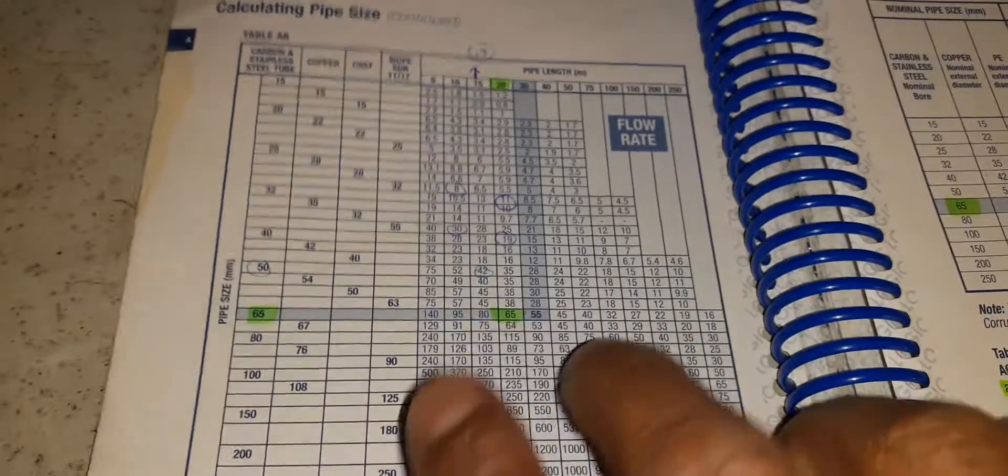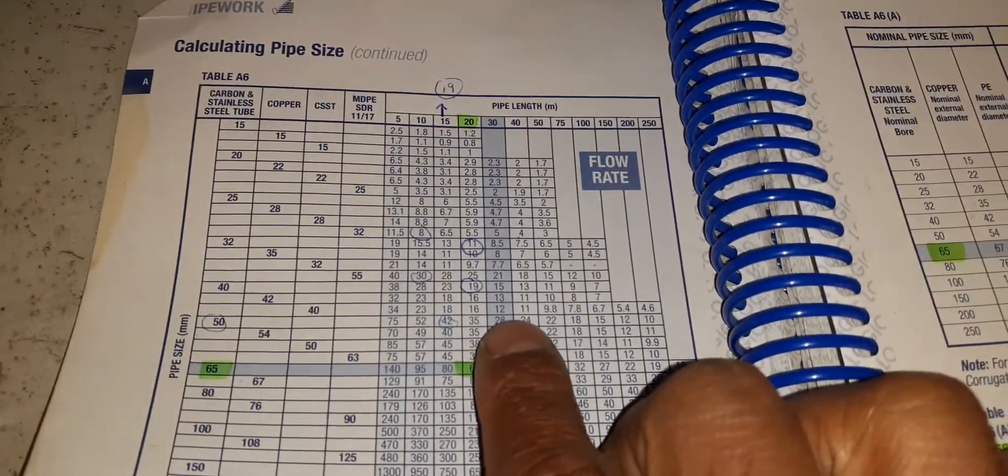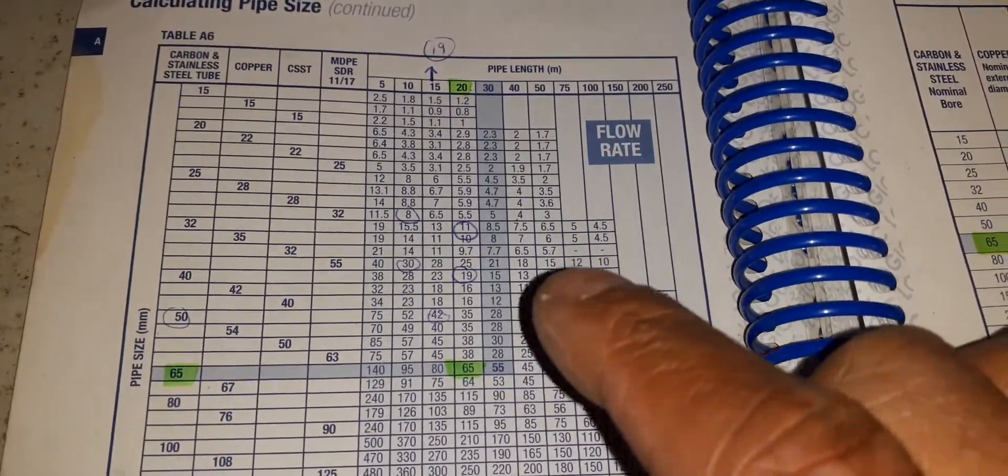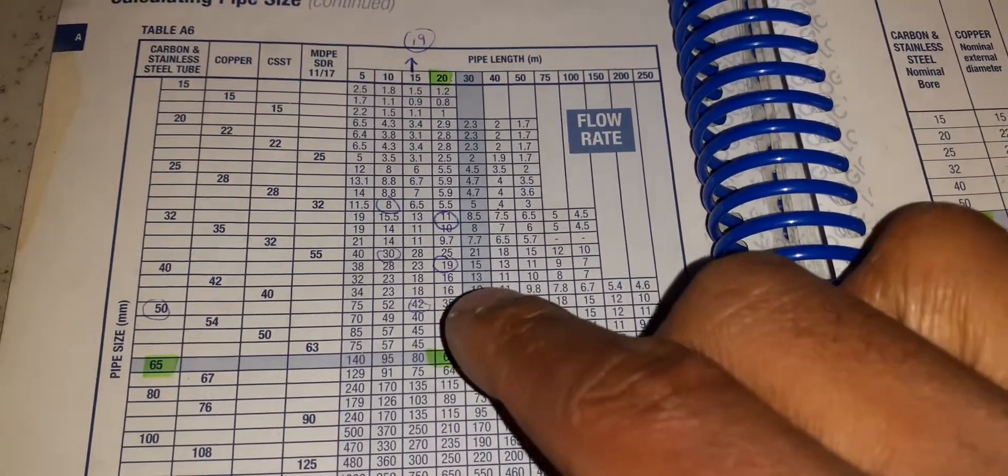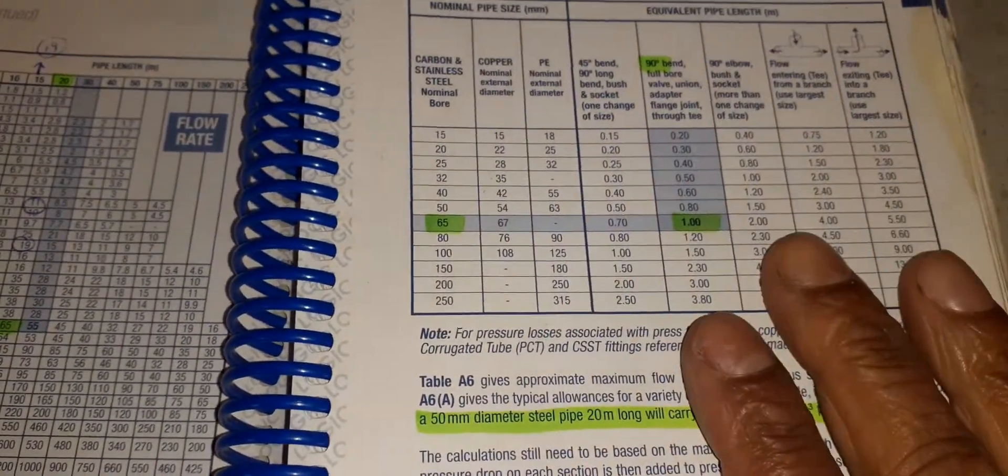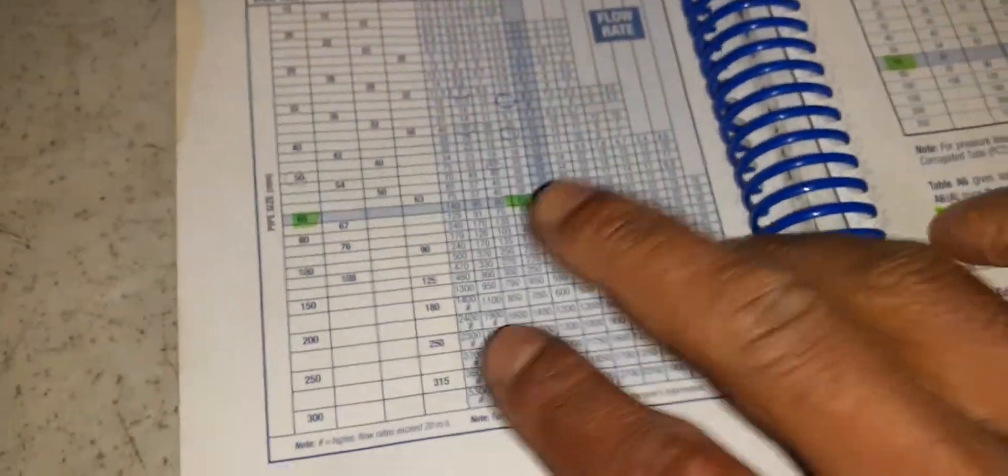So that's what we have to add on to our pipe run. Say for instance we had 10 elbows - we no longer have 18 meters of pipework anymore, we would have 28 meters of pipework because that's what the restriction is causing.